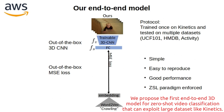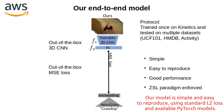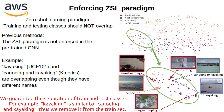We propose the first end-to-end 3D model for Zero-Shot Video Classification that can exploit large datasets like Kinetics. Our model is simple and easy to reproduce, using standard L2 loss and available PyTorch models.